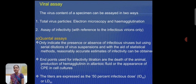Viral assays. A viral assay specimen can be assessed in two ways. Total virus particles — examples are electron microscopy and hemagglutination. Assay for infectivity refers to infectious variants only. Quantal assay only indicates the presence or absence of infective virus, but using serial dilutions of the viral suspension with a statistical method, a reliable accurate estimation of infectivity can be obtained.